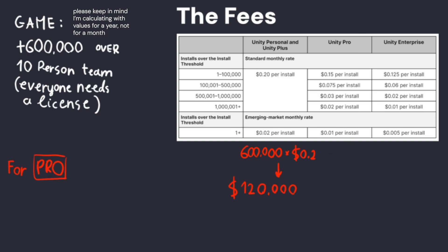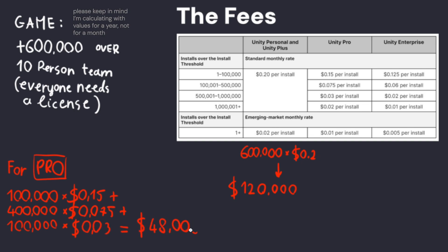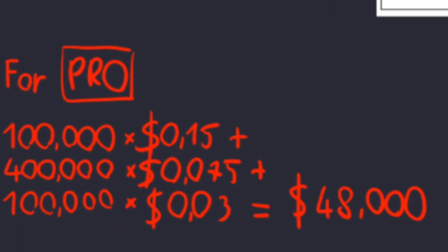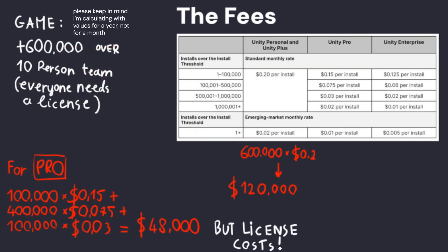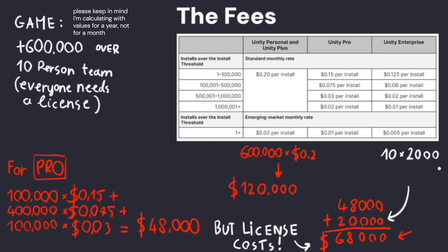Let's look at what would happen if we were to use Unity Pro. The calculations here get a bit complicated — here's the maths on screen. The result would be $48,000, definitely much less. But adding on the Unity Pro costs for your team, we end up with $68,000. Definitely less, but still a considerable amount.